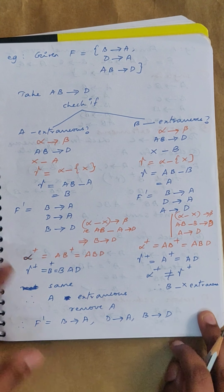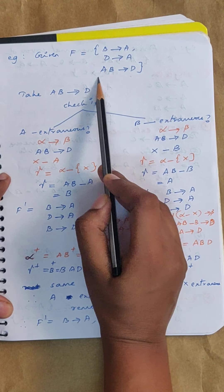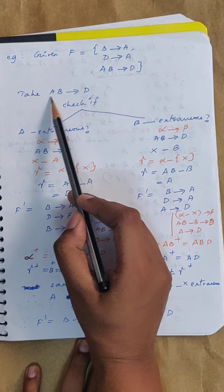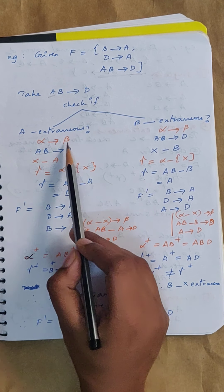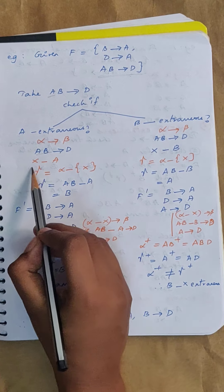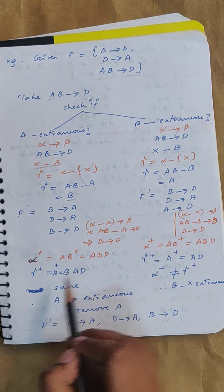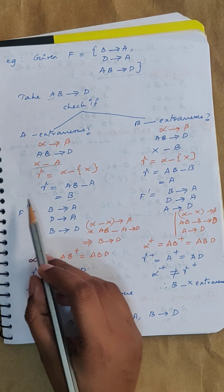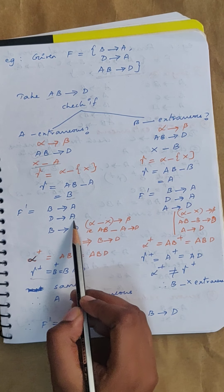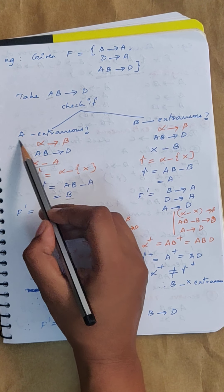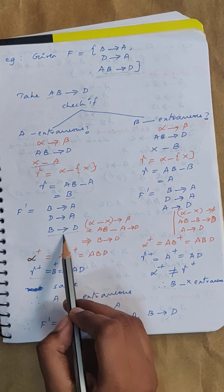Let us work through an example. The set of functional dependencies given: B→A, D→A, and AB→D. Here alpha is AB and beta is D. Let us find if A is extraneous. X is A, so gamma is AB minus A, which is B. Now find gamma closure in F dash. F dash is: remove AB→D from the original set, giving B→A and D→A, then add B→D (removing A from AB→D). So F dash is B→A, D→A, and B→D.